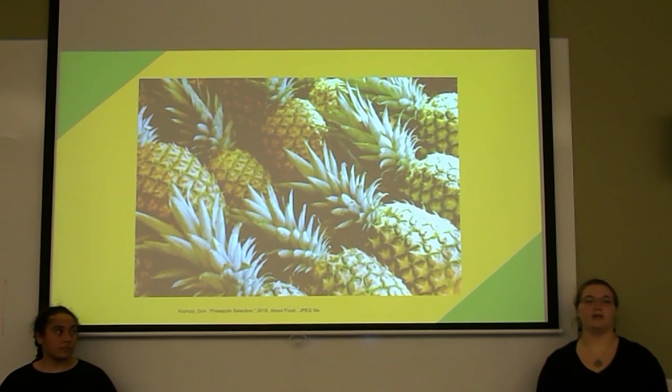Bi stands for bromelain iso-inhibitor, which means that it competitively inhibits the cysteine protease bromelain. Some other properties of stem bromelain: its molecular weight is 23.8 kilodaltons, its isoelectric point is 9.55, and its UV max is 280 nanometers.